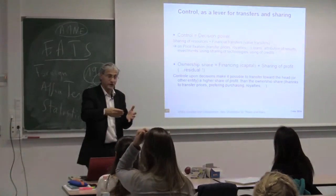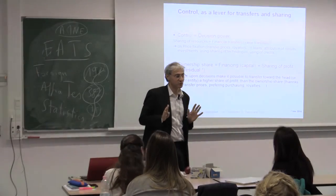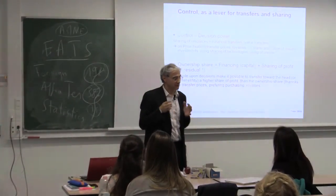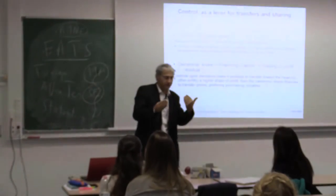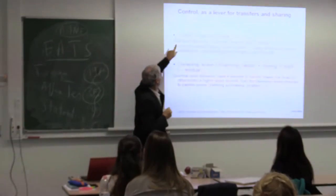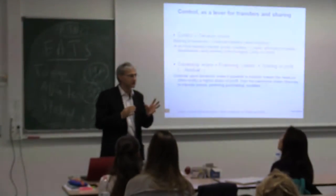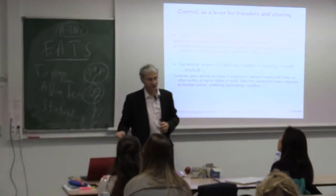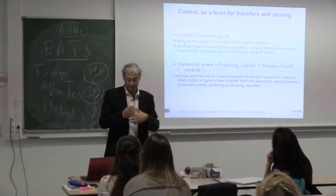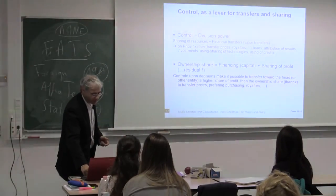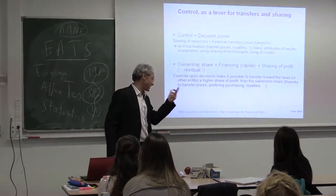A large amount of profits comes from C to A through transfer prices. At the end of the year, when we calculate residual profit, A only has its 36% ownership share on that profit. But A plays on the fact that control power lets it drive profit to the head. Control is decision power; ownership share governs financing and the sharing of residual profits. You can achieve a higher share of profit than your ownership share, thanks to transfer prices, preferential purchasing, royalties, etc.